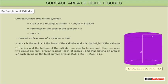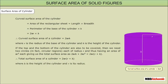If the top and bottom of the cylinder are also to be covered, then we need two circular regions each of radius r, each having an area of πr². This gives the total surface area as 2πrh + 2πr² = 2πr(r + h). Therefore, the total surface area of a cylinder is 2πr(r + h), where h is the height and r is the radius of the cylinder.